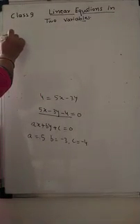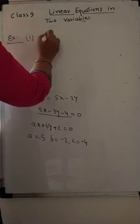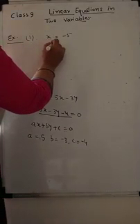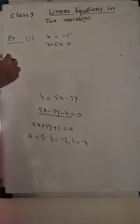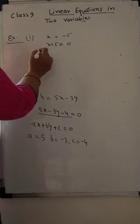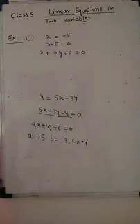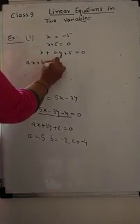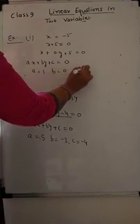Now the next example: write each of the following as an equation in two variables. Here the equation x plus 5 is equal to 0 is a linear equation in one variable. To convert it into two variables, the coefficient of y is 0, so you can write it as x plus 0 into y plus 5 is equal to 0. Comparing with ax plus by plus c equals 0, we get a is equal to 1, b is equal to 0, and c is equal to 5.